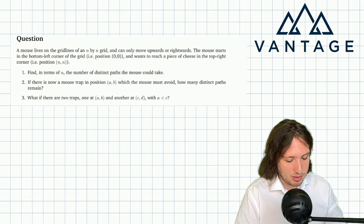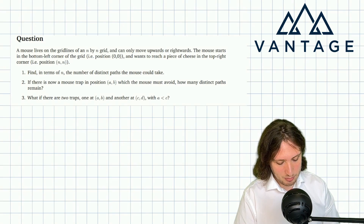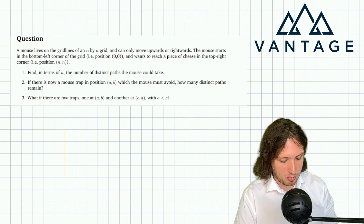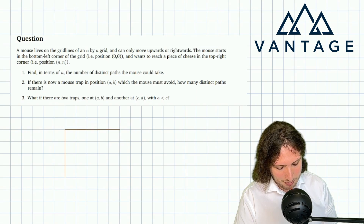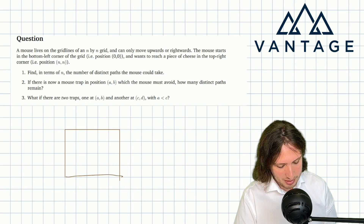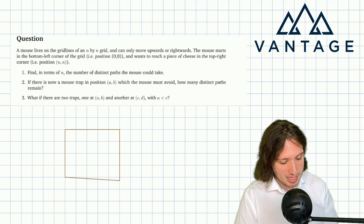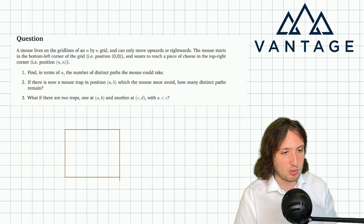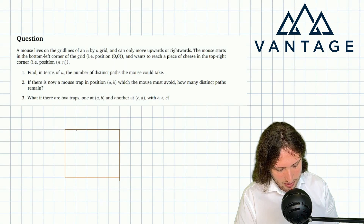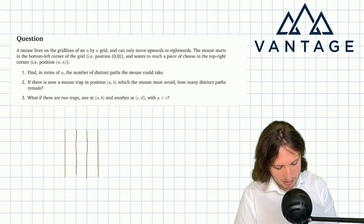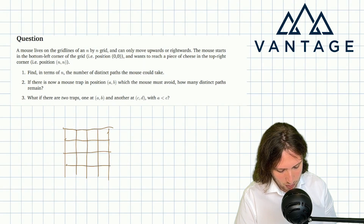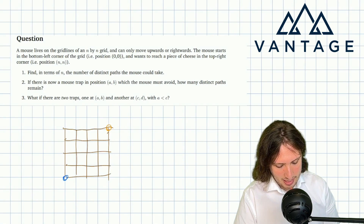We want to find, in terms of n, the number of distinct paths the mouse could take. Considering small cases may or may not be a good line of attack — the danger is that for a small case we can handle counting problems by brute force, but that doesn't generalize to large n. Let's draw a quick diagram of the 4x4 case to build some intuition for the basic setup.